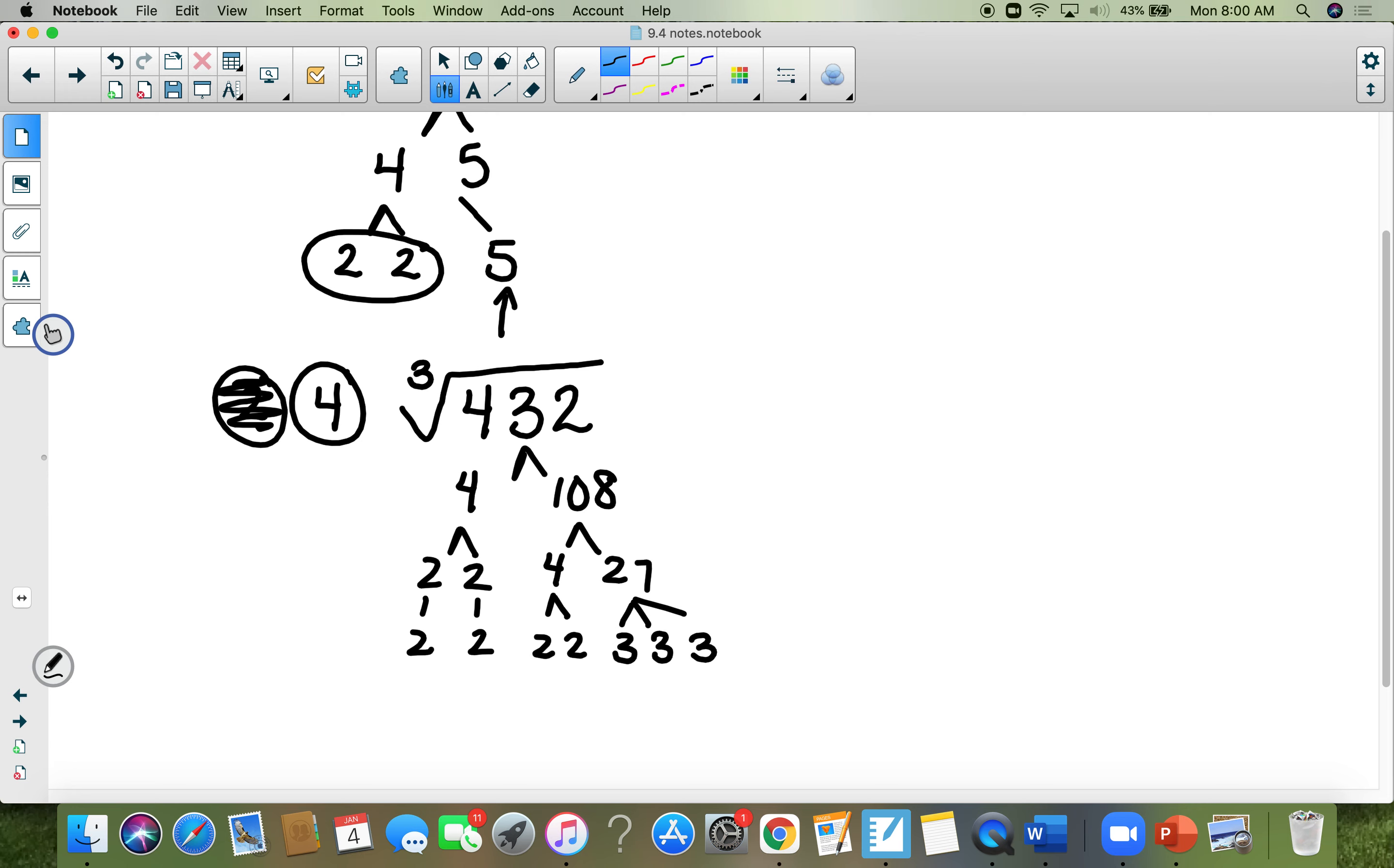Now that it's prime factored, I'm not looking for pairs of stuff, I have to look for triples. So I'm going to circle three 2's and I'm going to circle three 3's. For every 3 things, I can take out at least 1, so a 2 and a 3. And 2 times 3 is 6. Notice that this little guy doesn't have enough, he has to stay inside the cube root. So the only thing that has to stay inside the cube root is a 2. That's the answer for number 4.